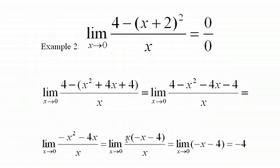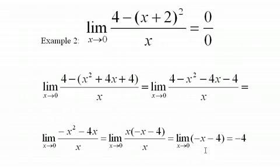And I can notice I can factor an x out of the top, cancel it with the bottom, and I end up with a pretty simple function here. Negative x minus 4 as x heads to zero. So as x heads to zero, it's pretty clear that this is getting closer and closer to negative 4.